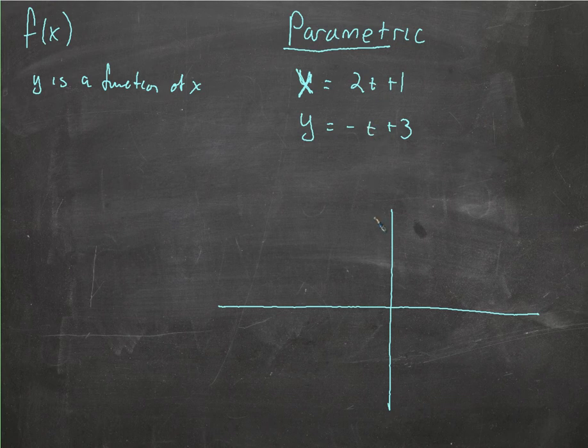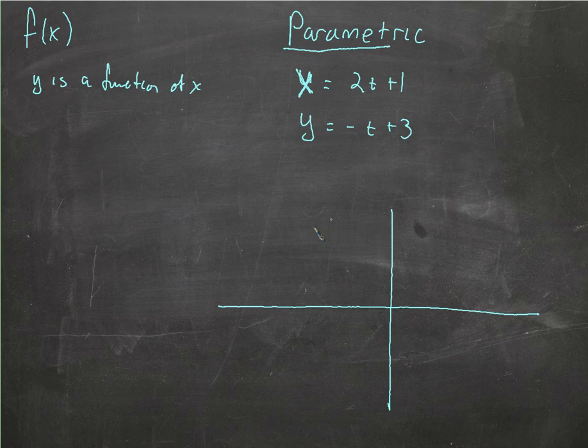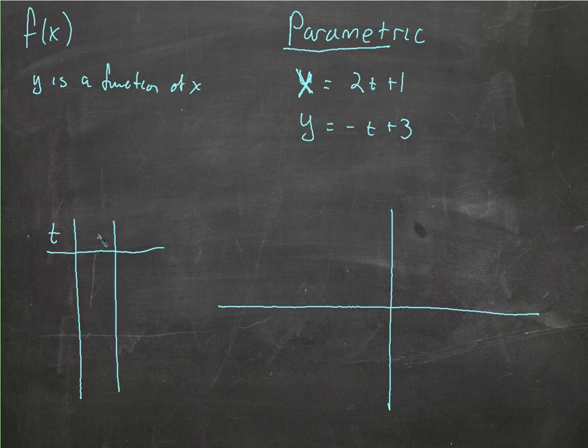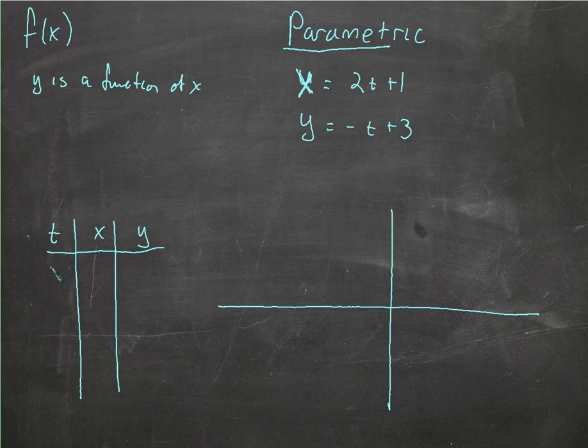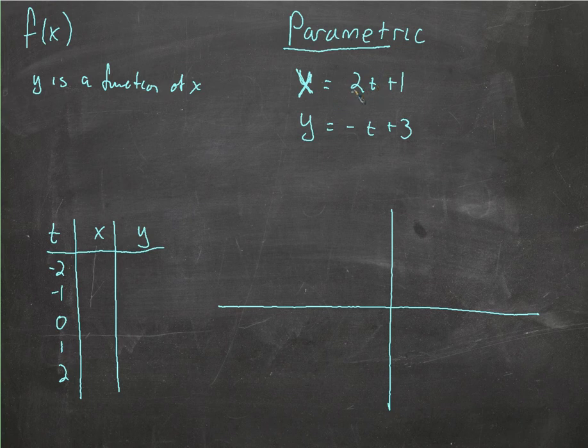So let's say x is 2t plus 1, and y is negative t plus 3. I'm going to keep it real simple here. So how do we translate this into a graph? It's a pretty simple thing. I need to decide what t is. T will tell me what x is. It will also tell me at the same time what y is. Then I'll know my x and my y, and I can graph it. So let's just start with negative 2. We put negative 2 in here. Negative 2 times 2 is negative 4. Negative 4 plus 1 is negative 3, so now we know what x is. For the same t value, we put that in here. Negative 2 is going to be positive 2 plus 3 is 5. So we have our first point, negative 3, 5.